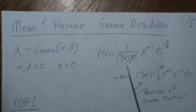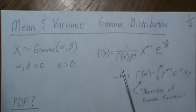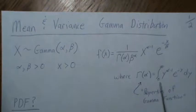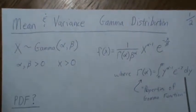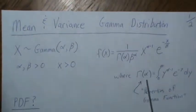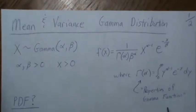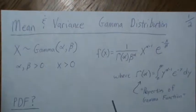A gamma distribution has a density like this, where the gamma function here is defined as this integral. I would suggest if you're unfamiliar with it to go to my video called Properties of a Gamma Function to find more details about that.